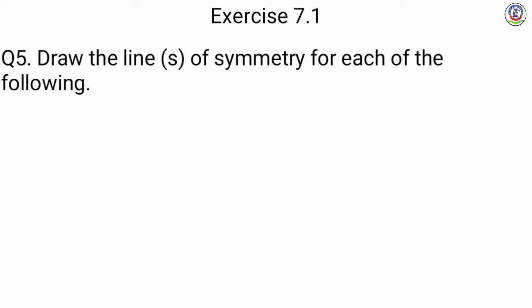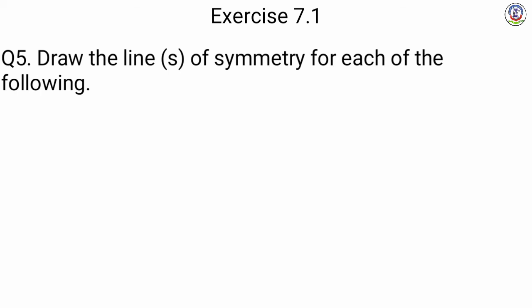Next is question number 5: Draw the lines of symmetry for each of the following. हम लोग को जो नीचे दिये गये shapes हैं उनमें line of symmetry draw करनी है. For A, the figure is cut in a vertical line of symmetry, so in this we draw the vertical line of symmetry.